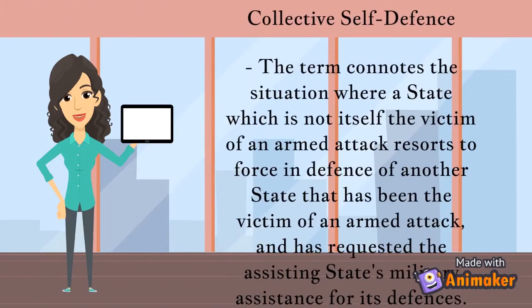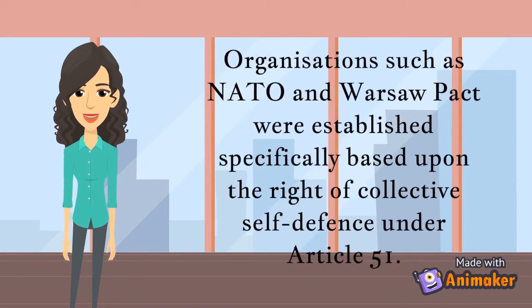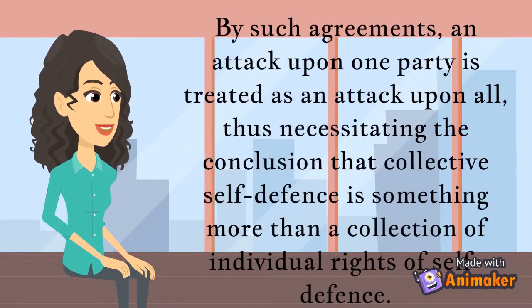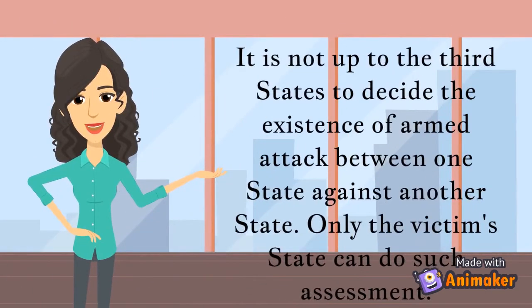Collective self-defense connotes the situation where a state which is not itself the victim of an armed attack resorts to force in defense of another state that has been the victim of an armed attack, and has requested the assisting state's military assistance for its defense. Organizations such as NATO and the Warsaw Pact were established specifically based upon the right of collective self-defense under Article 51. By such agreements, an attack upon one party is treated as an attack upon all, thus necessitating the conclusion that collective self-defense is something more than a collection of individual rights of self-defense. It is not up to third states to decide the existence of an armed attack; only the victim state can make such an assessment.